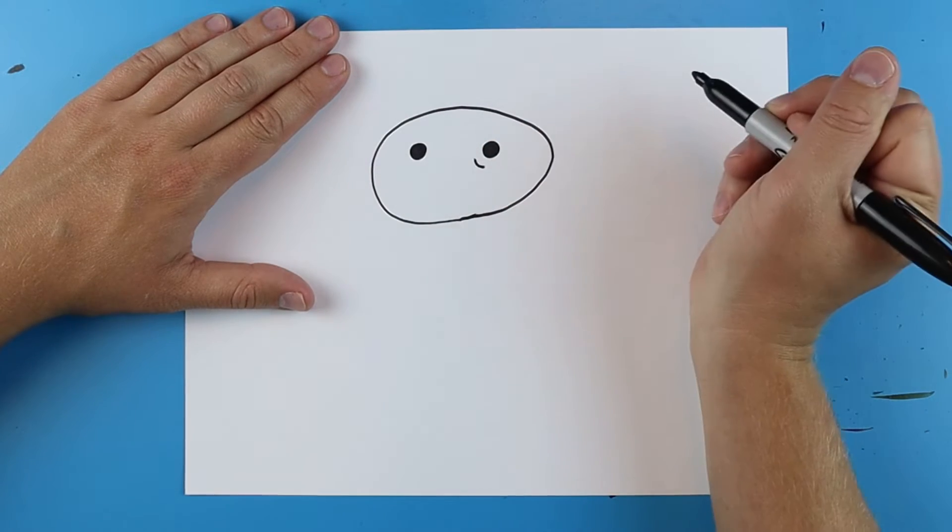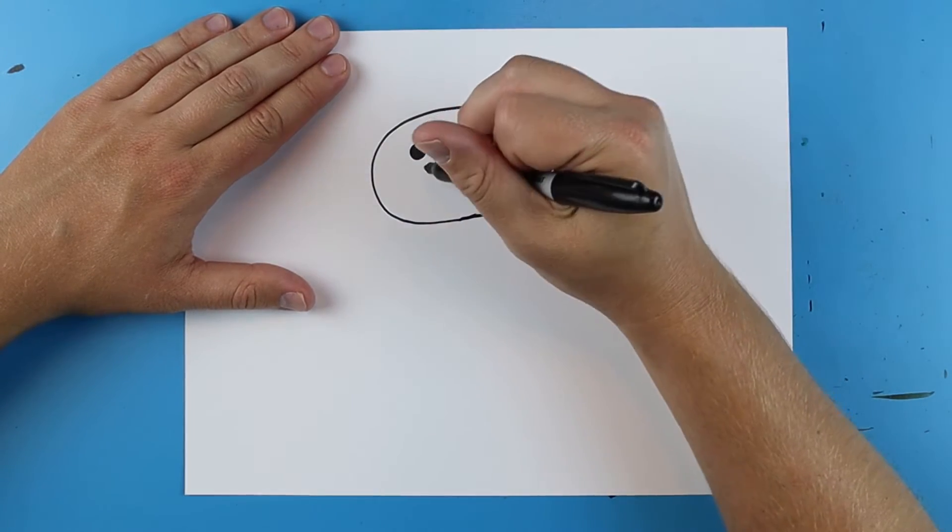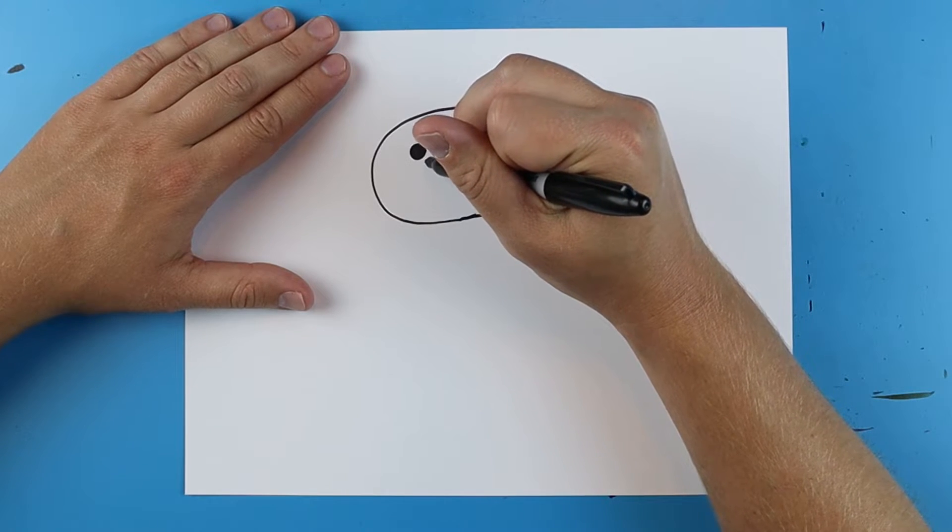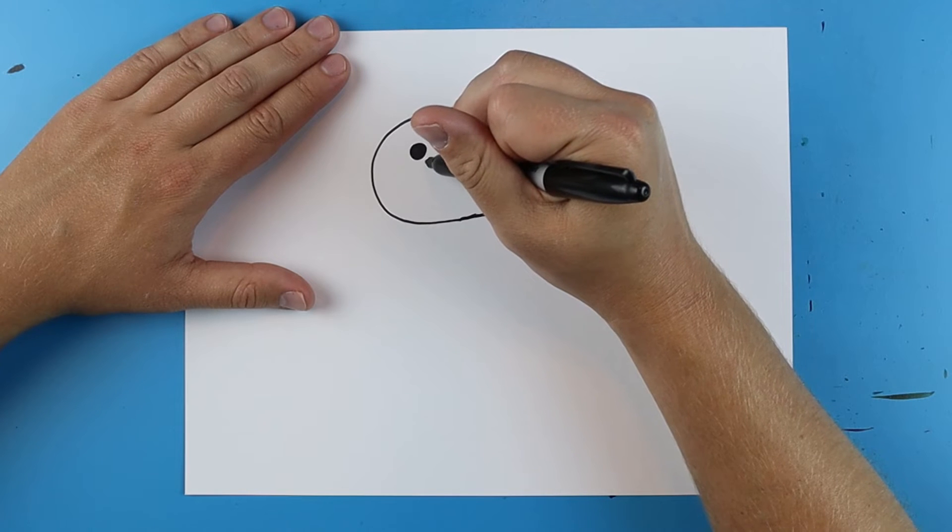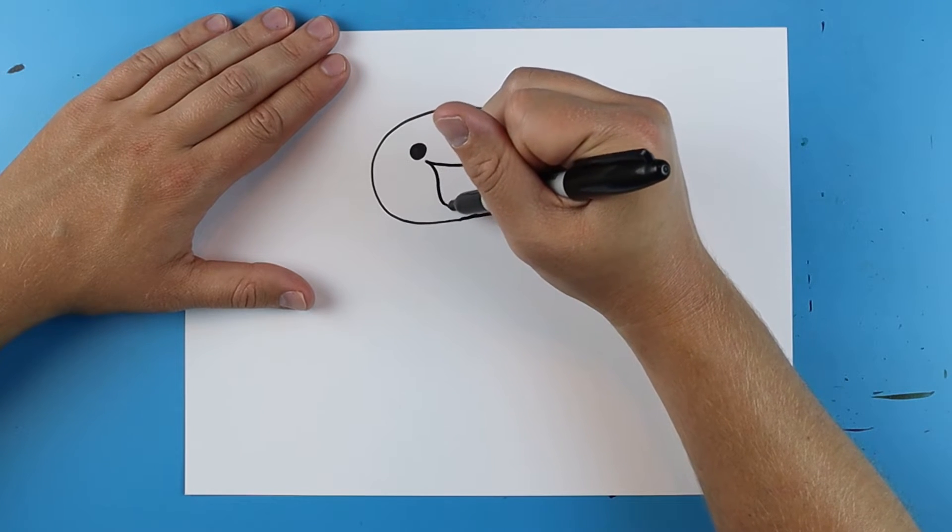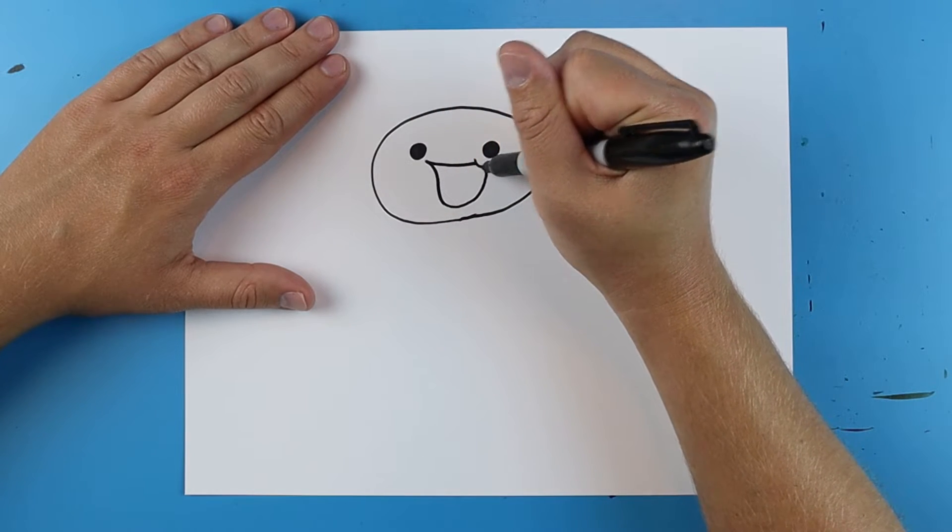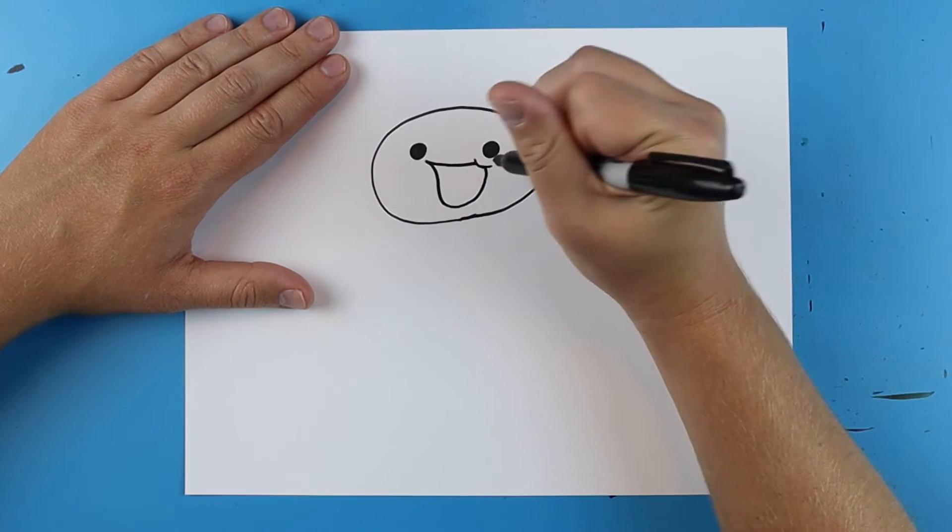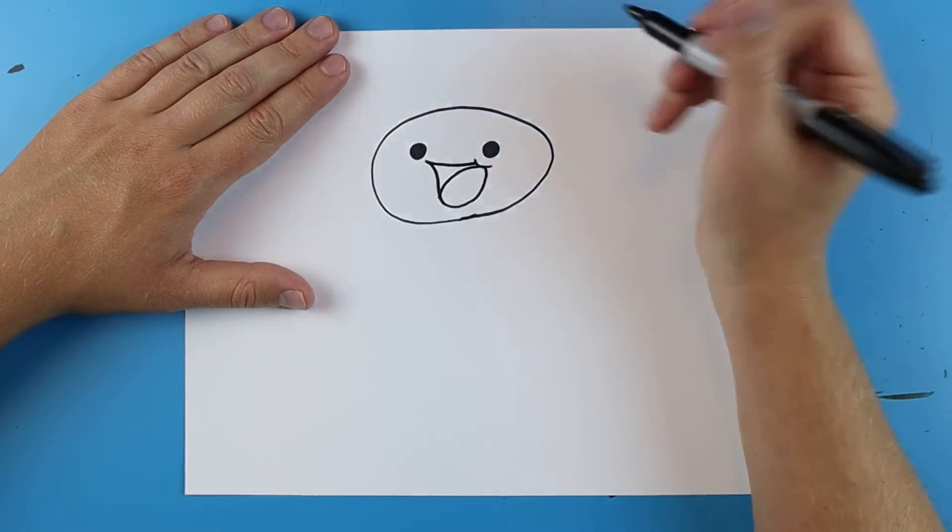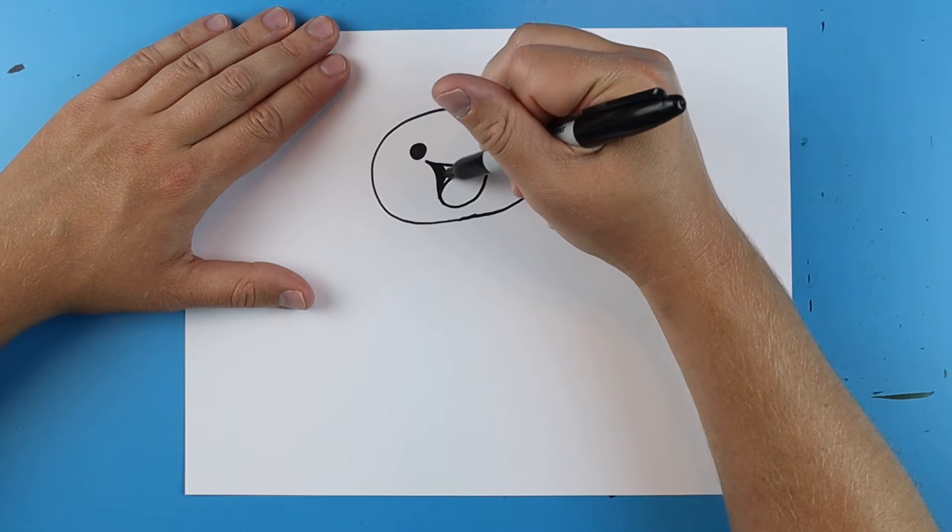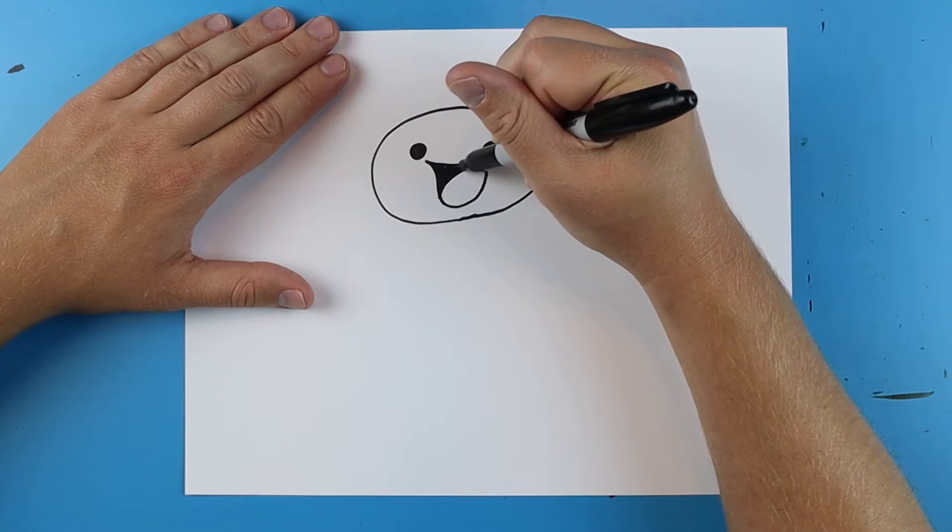I'm going to put a little curved line right there for part of the mouth and then right over here I'm going to add a big line for the mouth and then a line that goes down and then it's just going to curve up here. Add a curved line for the tongue and then just color in the rest of this part of the mouth.